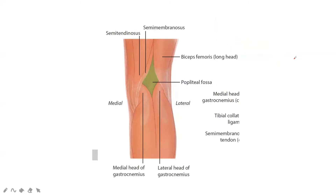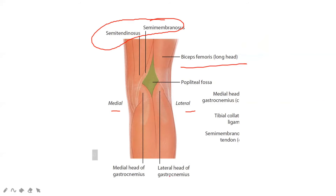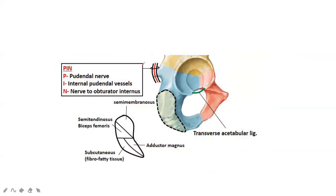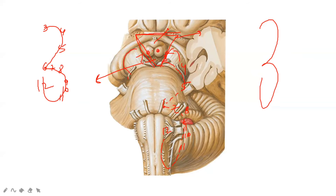This is the popliteal fossa boundary. The medial part has semitendinosus and semimembranosus, and the biceps femoris is on the lateral aspect. Returning to the previous brainstem image — the interpeduncular fossa is between the anterior and posterior perforating substance, between the two peduncles. Its contents rightly include mammillary bodies, the oculomotor nerve, and the posterior perforating substance.